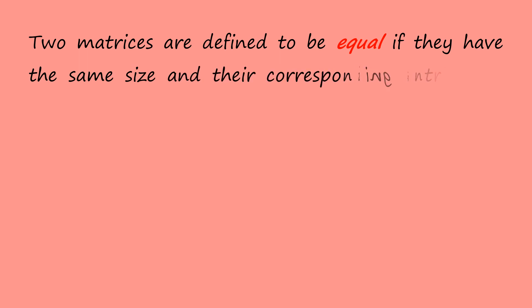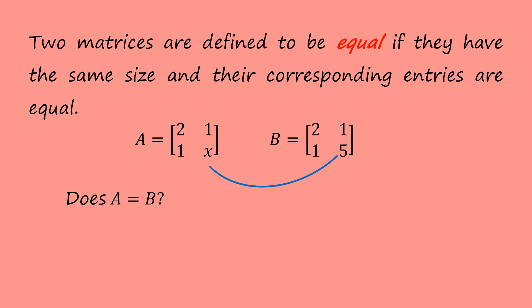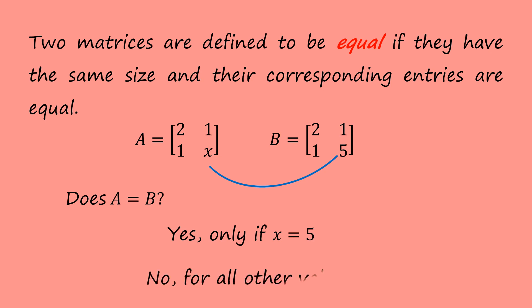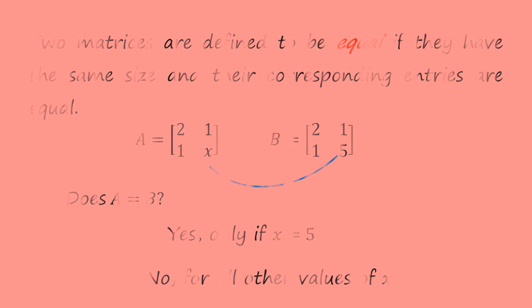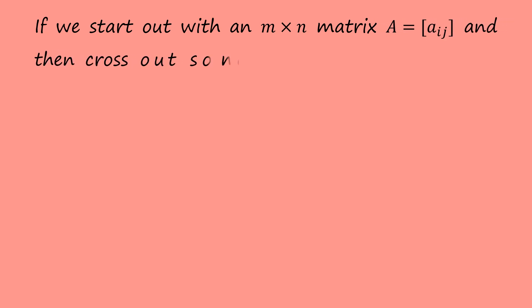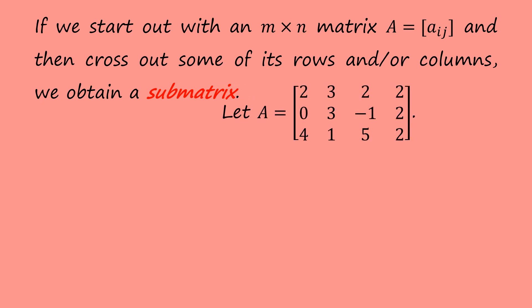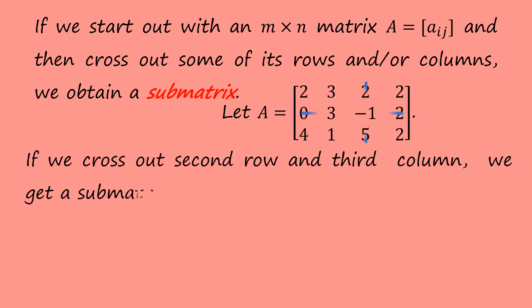Two matrices are defined to be equal if they have the same size and their corresponding entries are equal. For instance, we have a 2 by 2 matrix A and a 2 by 2 matrix B. Does A equal B? There are 2 possible solutions: yes, only if x equals 5, and no for all other values of x. If we start with an m by n matrix and cross out some of its rows and columns, we obtain a submatrix. If we cross out the second row and third column, we get a submatrix of this form.